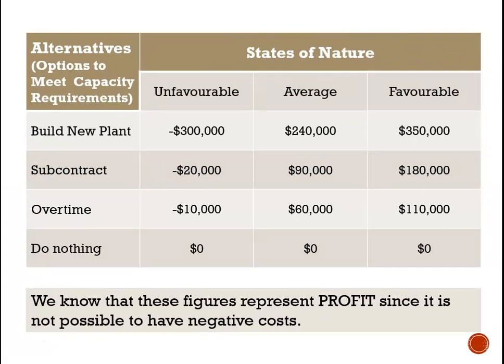So we're going to apply all of this to another payoff table. For this payoff table, we're looking at alternative options to meet our capacity requirements. The alternatives before us: build a new plant, subcontract, do overtime, or do nothing. And the same states of nature are before us — unfavorable, average, or favorable. And the figures in this payoff table represent profits.